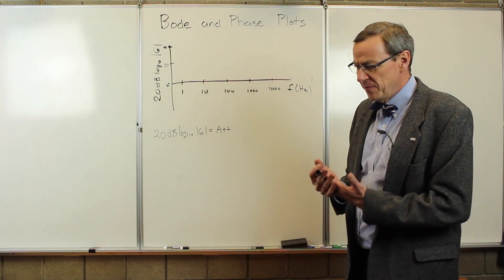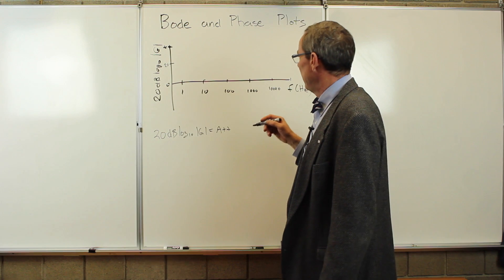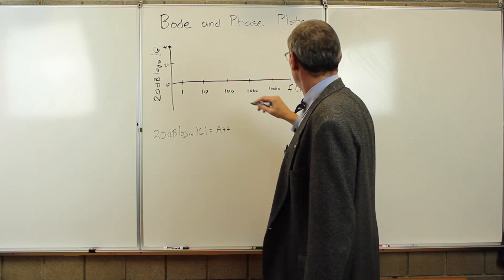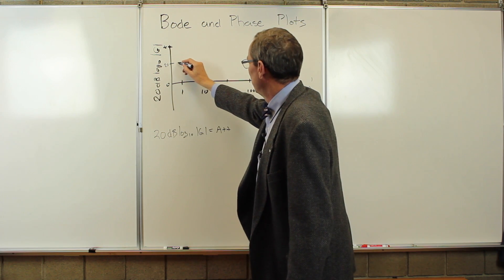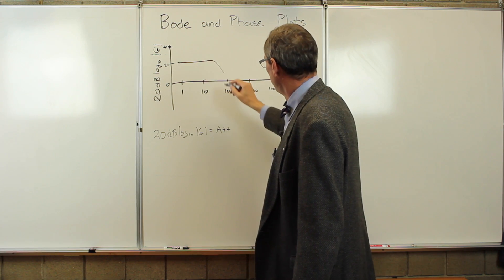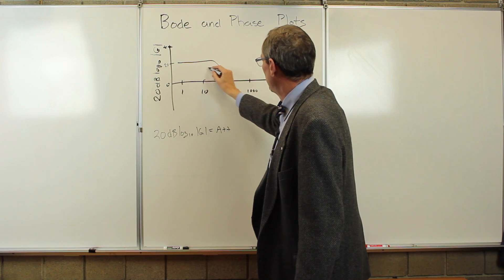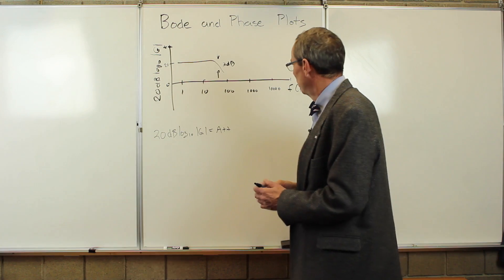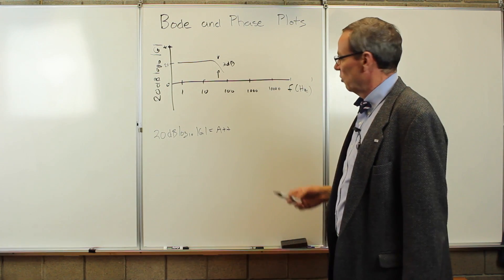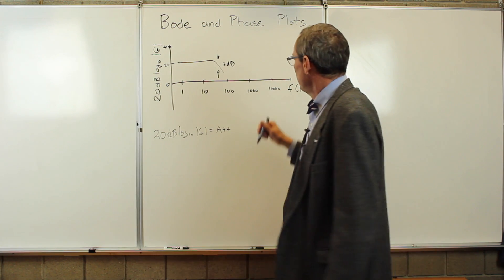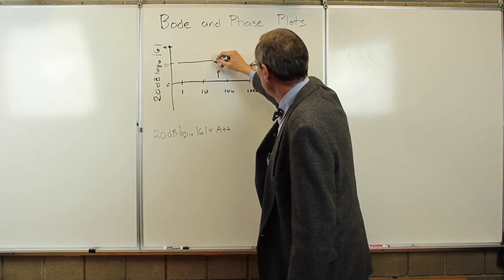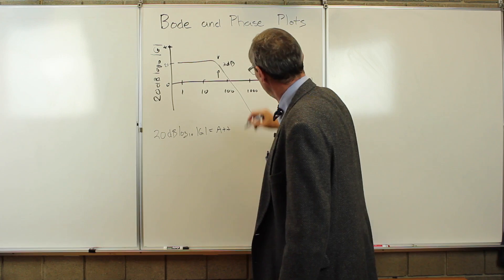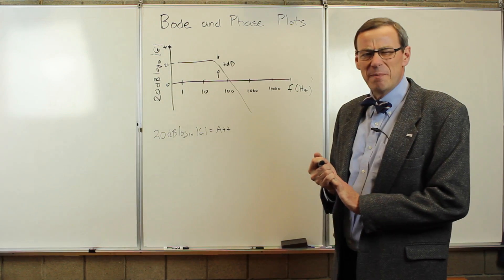So if the attenuation or the gain is constant, we get a flat curve here. If it is falling, we might have something that is some flat curve and then it starts to fall. And when it falls by three dB, we know the power is down by the factor of one over the square root of two and so forth.